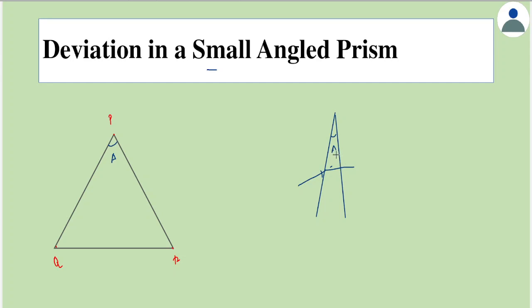Now we learned that if the prism is placed in a medium, say like air, where the refractive index of air is 1, and if n is the prism's refractive index, then we know that n is equal to...